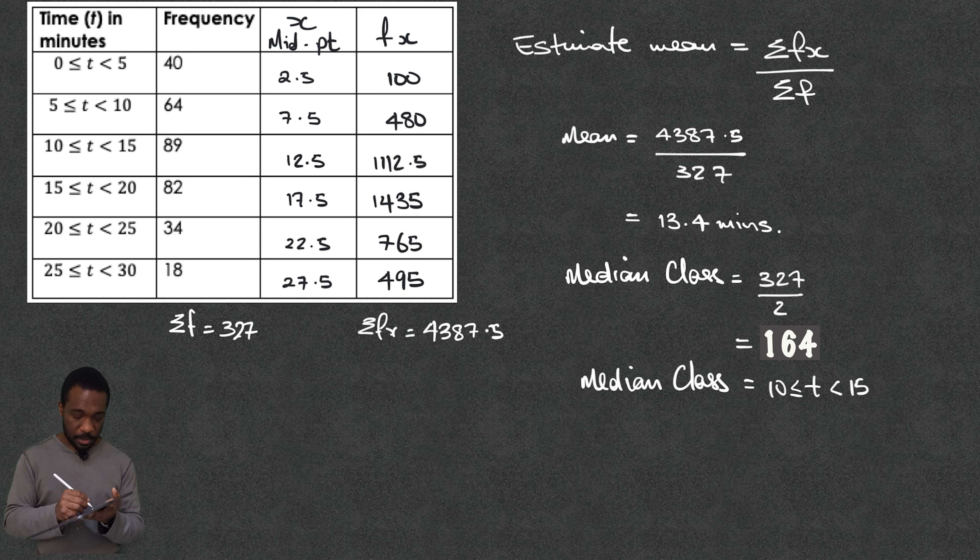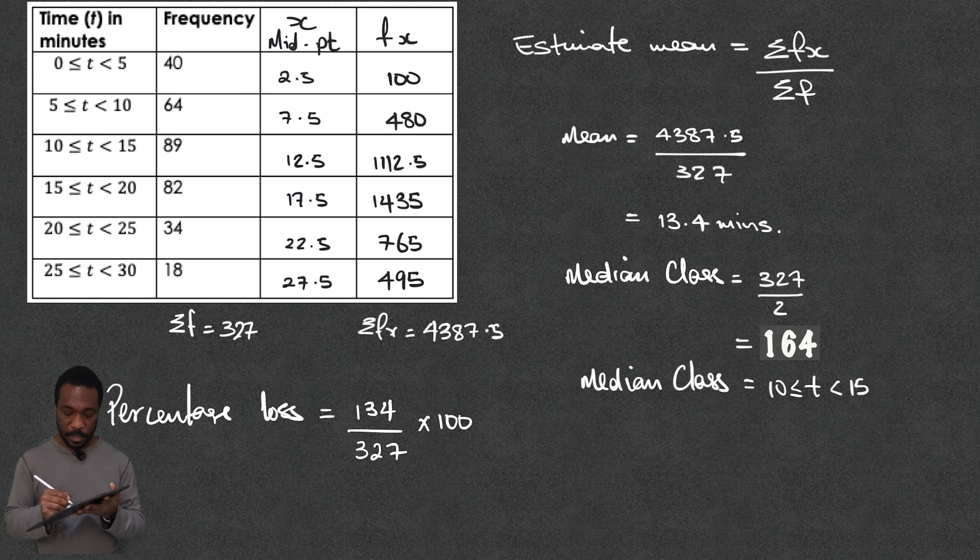So I'm going to call this my percentage loss. So what percentage of my money am I going to end up losing just giving away free pizza? Well for that I need to add up what I've got here and that adds up to 134 divided by the total number of deliveries that we made and then times by 100. Well to the nearest whole number that works out to 41 percent.